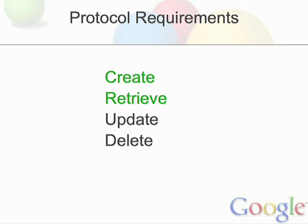All right. So we're, in essence, halfway done with the Atom Publishing Protocol. We have create and retrieve, and the other two parts are update and delete.